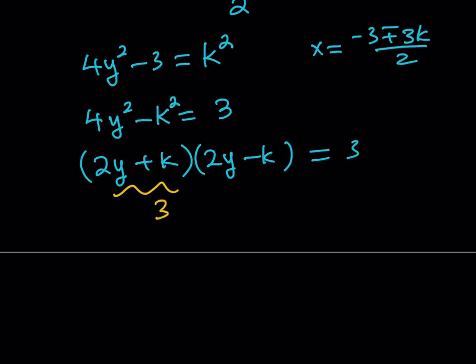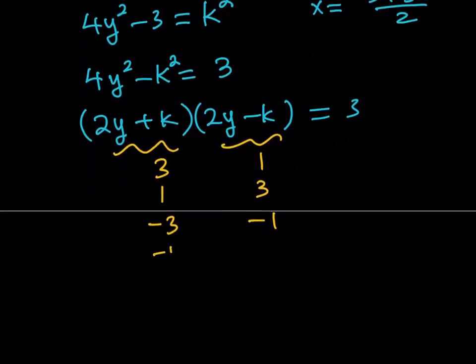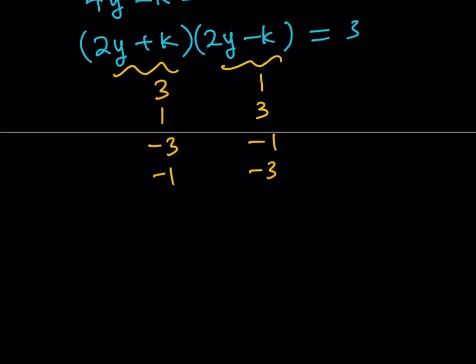What numbers can go into 3? Really, at this point, we can just look at the options. This can be a 3 and this can be a 1, or this can be a 1 and this can be a 3. Then this can be a negative 3 and this can be a negative 1, or this can be a negative 1 and this can be a negative 3. And this is it, because 3 is prime, therefore there's no other way to factor it. And we included the negatives because it says integers.